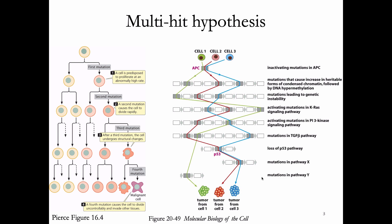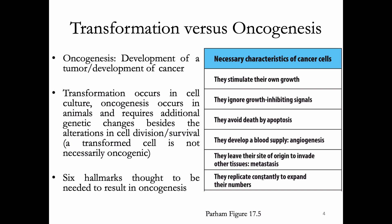Just because a cell is transformed does not make it cancer. There is a separate process called oncogenesis that allows a cell to become a cancer cell. Transformation occurs in cell culture and allows a cell to grow uncontrollably in a dish, but for a cell to grow uncontrollably in an animal, there are additional types of changes. A transformed cell is not necessarily oncogenic — to be oncogenic, we need additional changes beyond alterations in cell growth and survival.